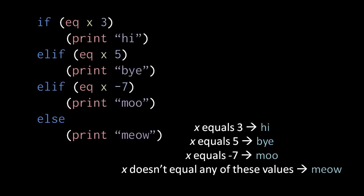When an if does have one or more elif clauses, it can also end with an else clause. The else clause effectively acts as the default, such that when none of the conditions test true, it's the else clause which gets executed. So here, when x doesn't equal 3 or 5 or negative 7, the code prints meow.